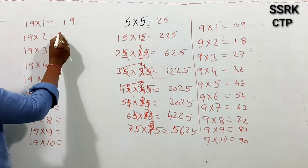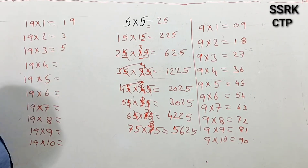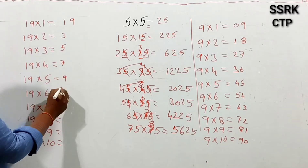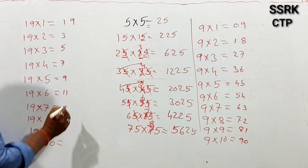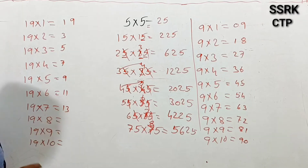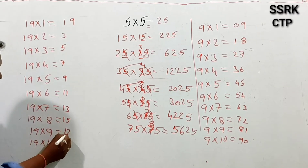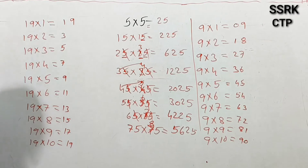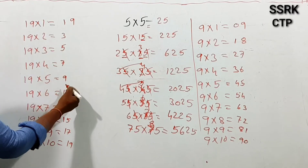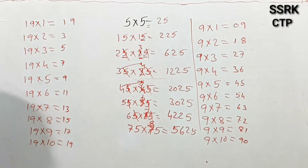Odd numbers are 1, 1 after 3, 3 after 5, 5 after 7, 7 after 9, 9 after 11, 11 after 13, 13 after 15, 17, 19. So it is odd numbers: 1, 3, 5, 7, 9, 11, 13, 15, 17, 19.